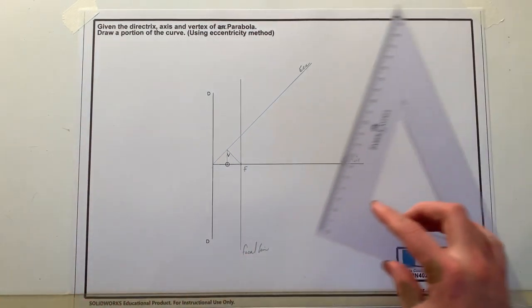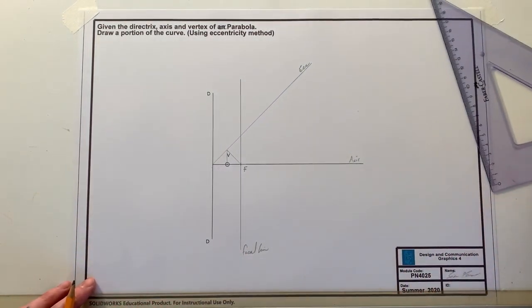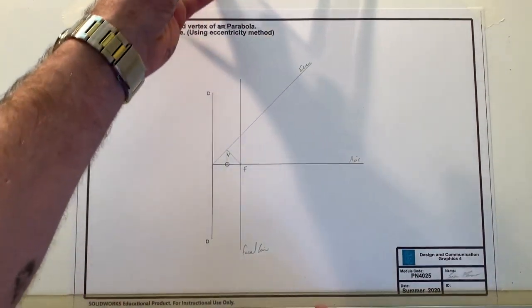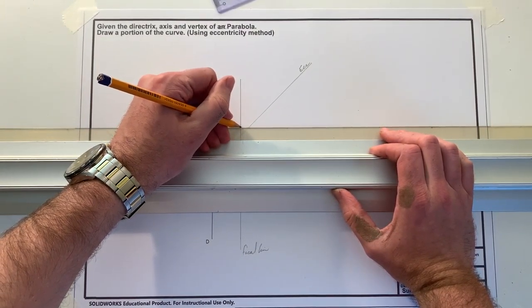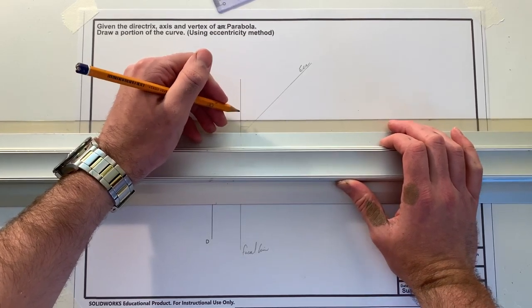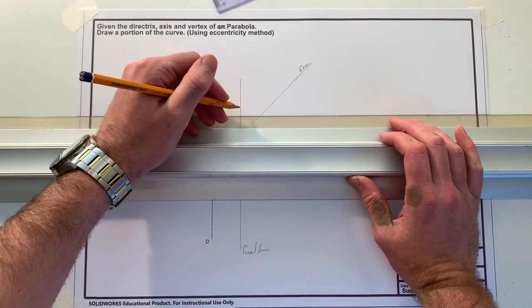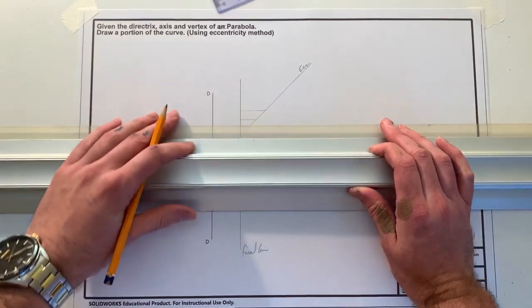So now what we can do is use that method to complete this drawing. To do that I'm just going to be taking lines randomly as you can see here over to hit our ECC, eccentricity line, and I'm going to take a few of them.